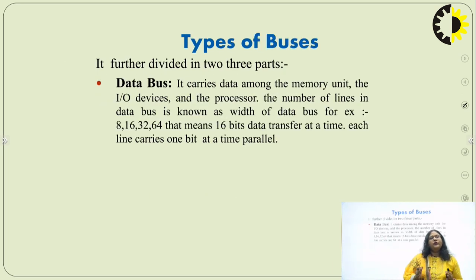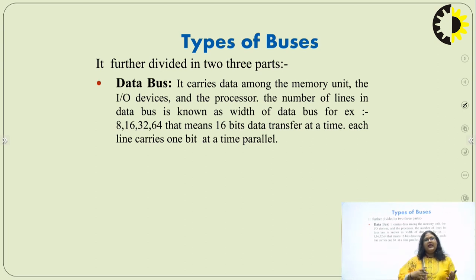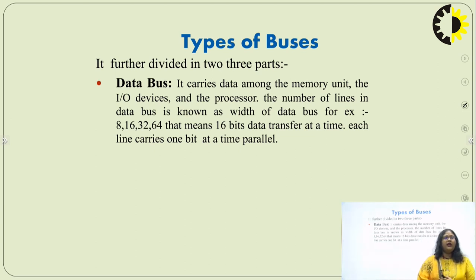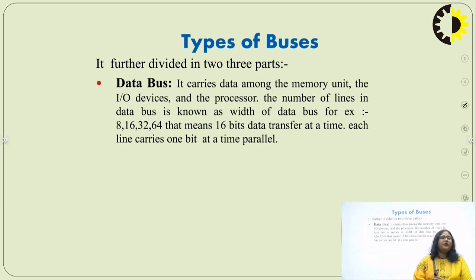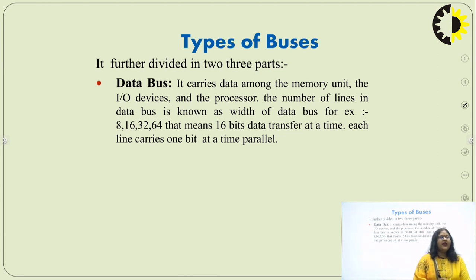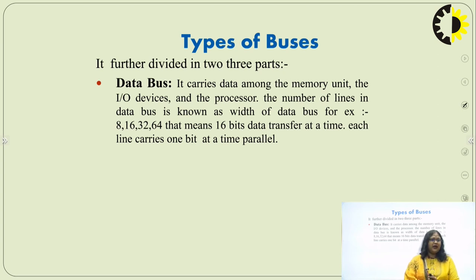The system bus divides into three major buses. First is the data bus. The data bus carries data among the memory unit, input device unit, and the processor. For example, if we have 8-bit data units, we use an 8-bit system for transferring data. If we have 16 bits, we transfer data using a 16-bit bus.